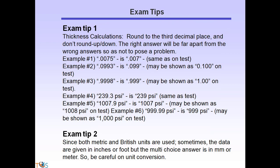Here are several exam tips. When doing calculations, round to the third decimal place — for example, 0.0075 rounds to 0.007, and 0.0993 rounds to 0.099. Similarly, if your calculation shows 239.3 psi, you can round it to 239 psi to find the correct answer. Since both metric and British units are used, sometimes data are given in inches or feet but the multiple-choice answer is in millimeters or meters — so be careful with unit conversion.